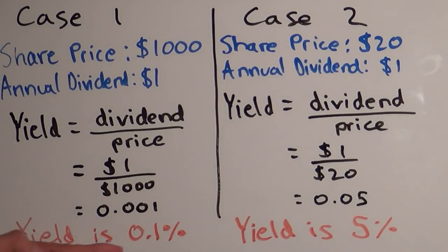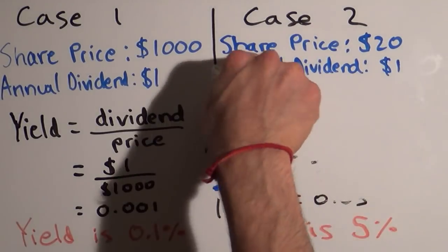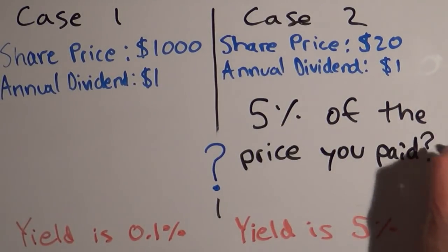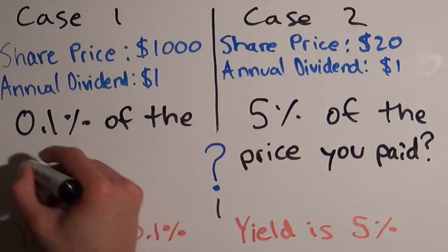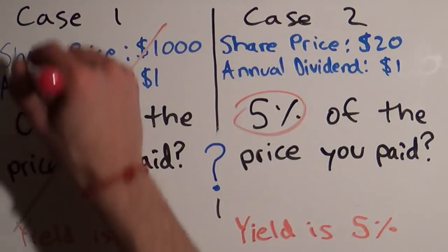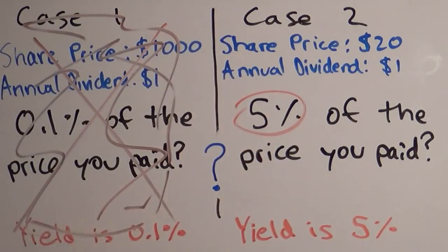With the one thousand dollar share, which has a yield of zero point one percent, it means I'll be getting zero point one percent of the money I paid every year — zero point one percent of the price will be paid to me in dividends. So which one would you rather pick? Would you rather have your dividends equal five percent of the price you paid, or would you rather have them equal only zero point one percent of the price you paid? I would rather have them equal five percent of the price I paid because I get more money relative to the price I paid.